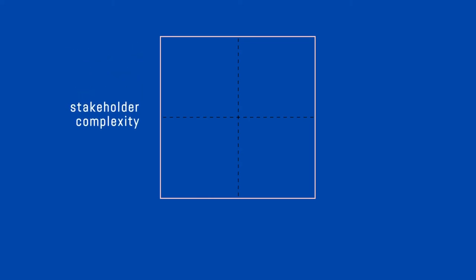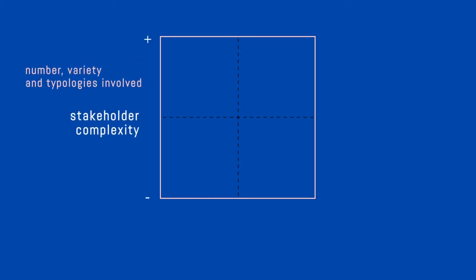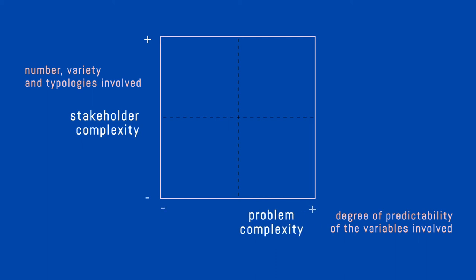First, a simple framework can help us understand these events in terms of governance. We will plot on the vertical axis the complexity of an event related to the number, variety, and typology of stakeholders involved, and on the horizontal axis the degree of predictability of the variables involved in the problem at hand. An event that is likely to be predicted will be placed in the bottom left corner of the grid, while an unpredictable event will be plotted in the top right corner.